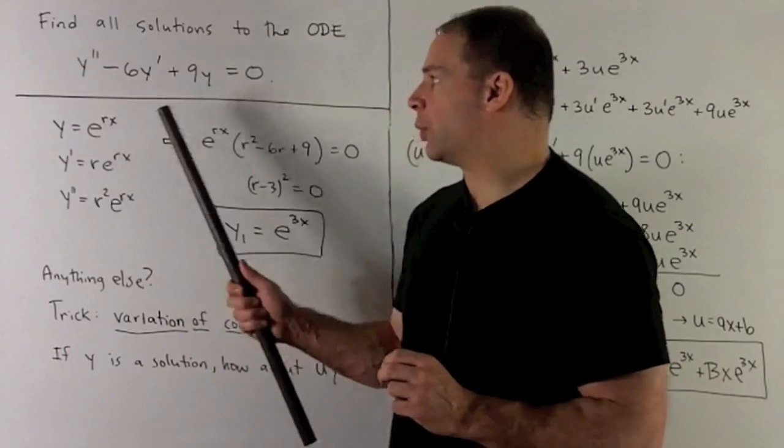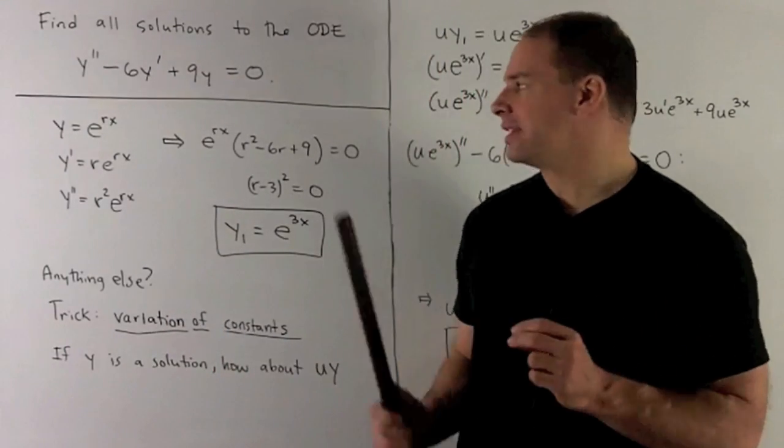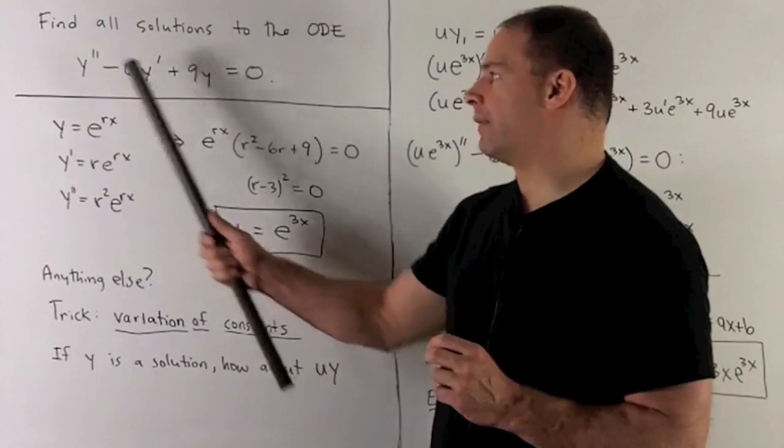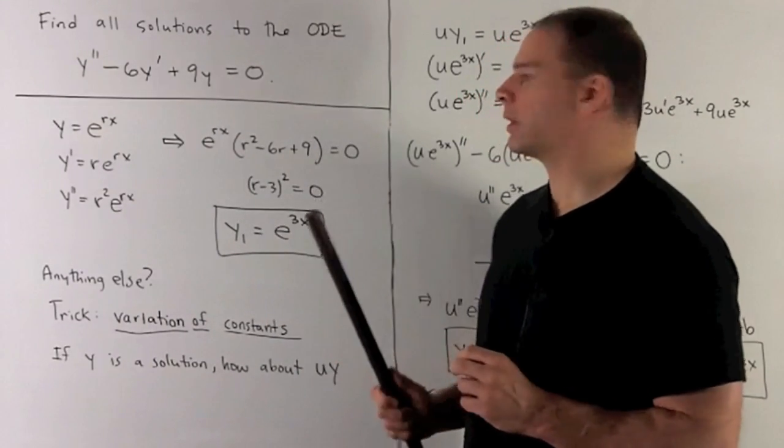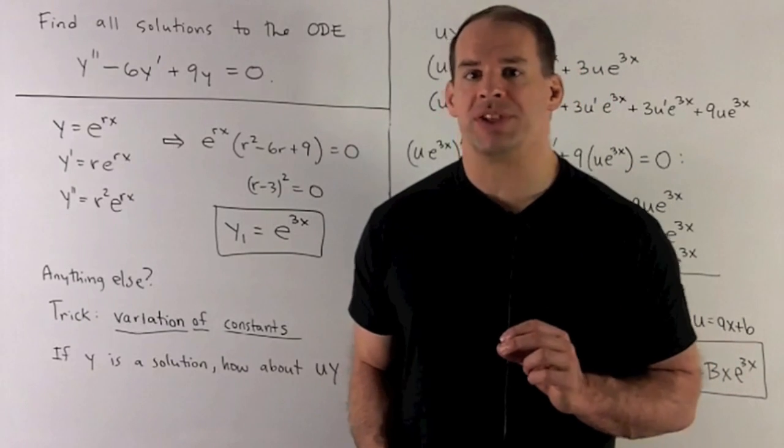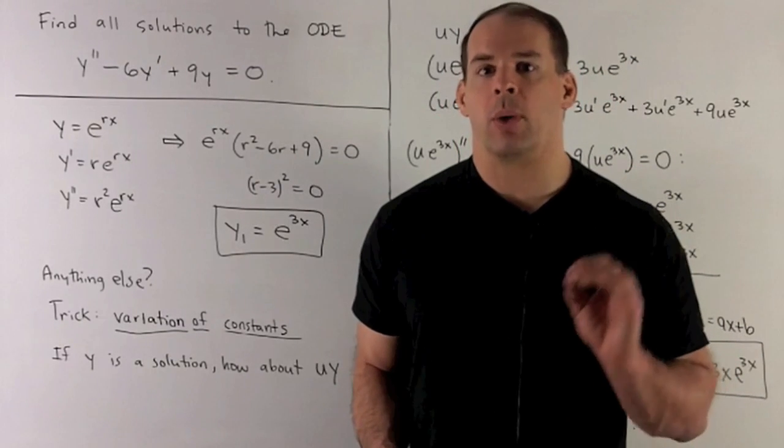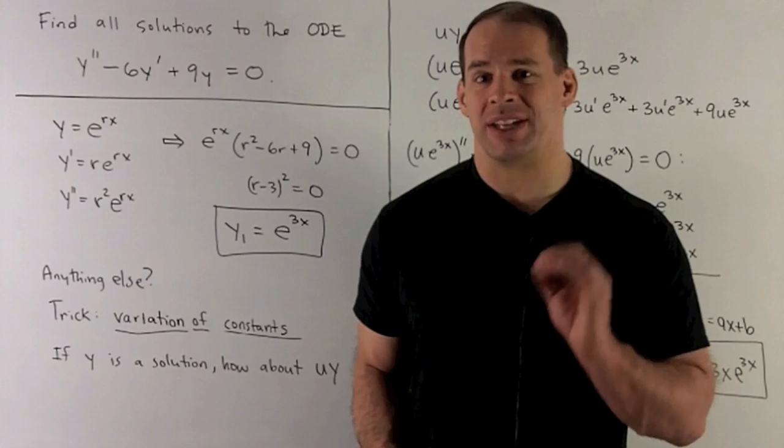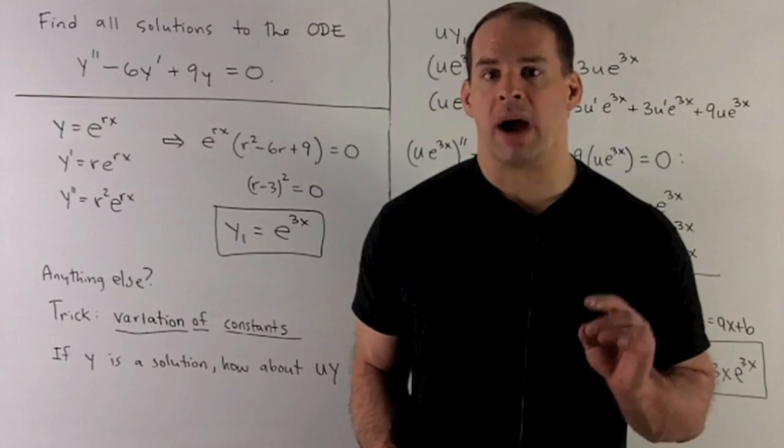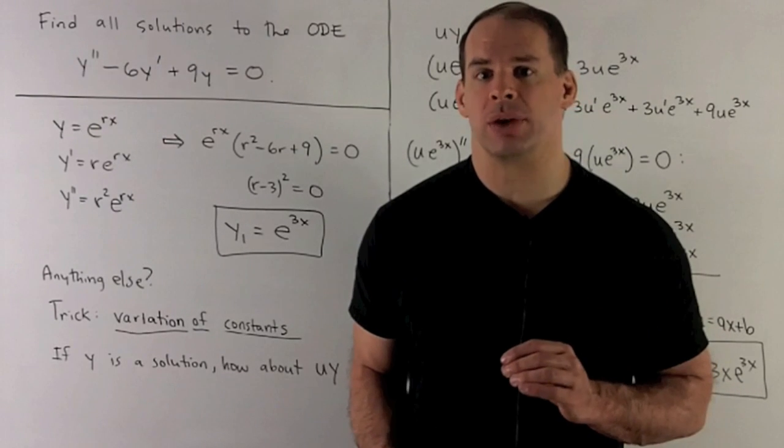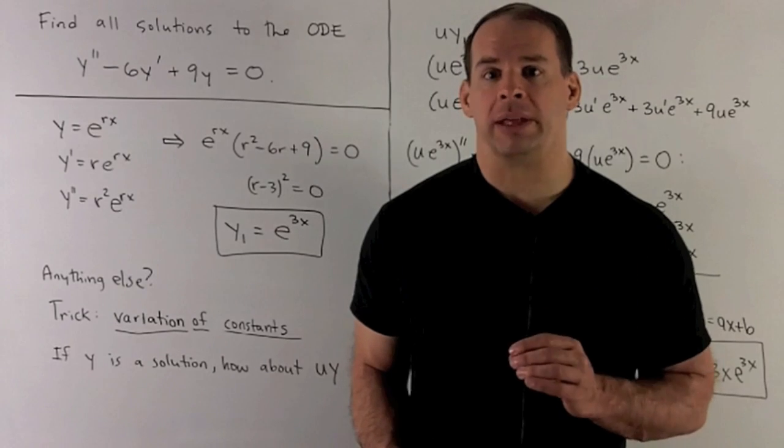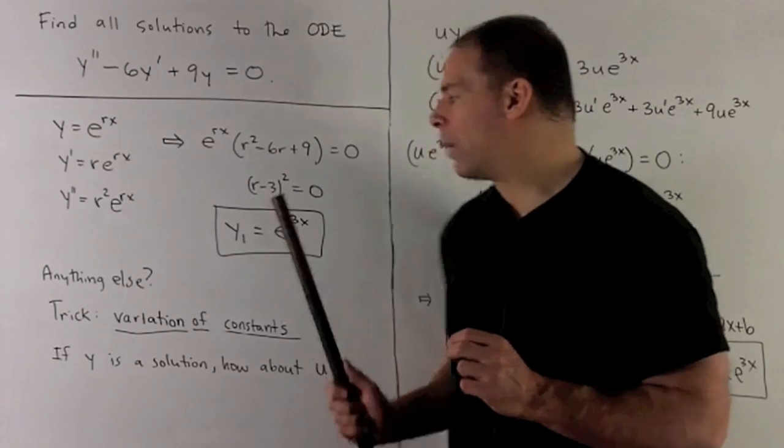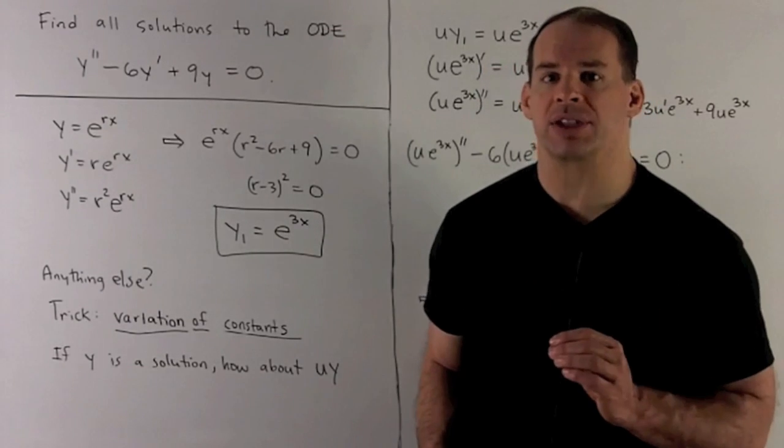We put these into our ODE and I get e to the rx times our characteristic polynomial. So that's just peeling off the coefficients. e to the rx can never be equal to zero, so we throw it away. And then I just solve r squared minus 6r plus 9 equals zero. r minus 3 squared equals zero. So our root is going to be three. So we get a solution of the form y1 equal to e to the 3x.